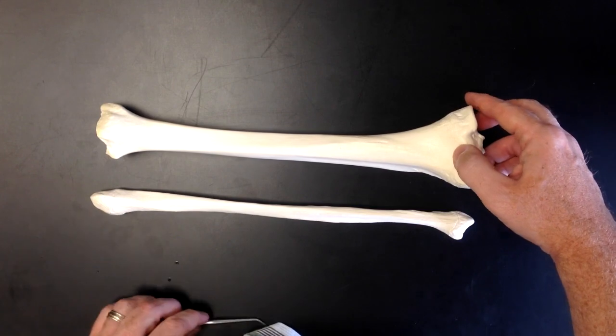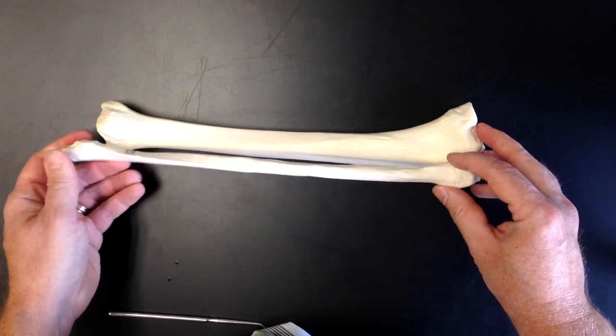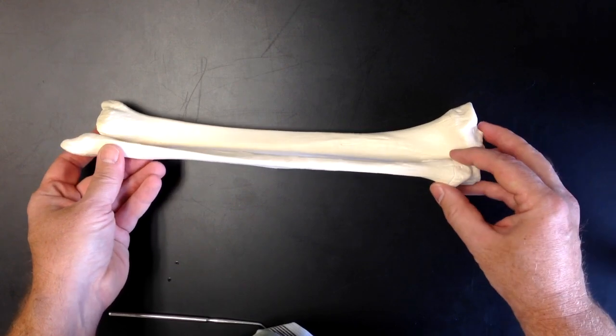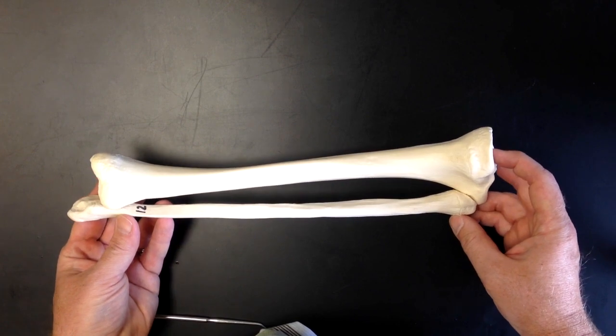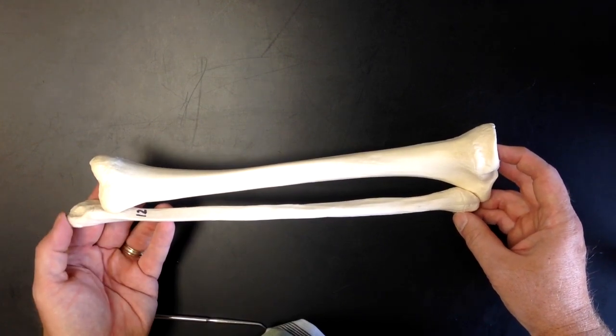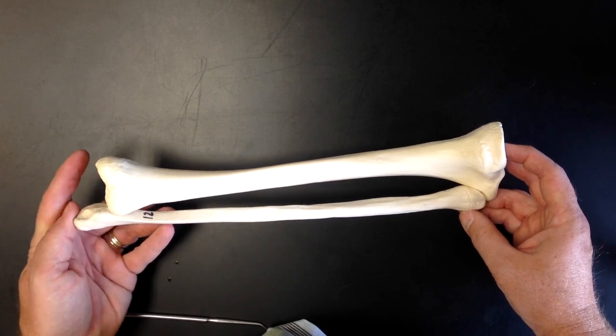The interesting thing about these two bones, if I put them together the way they would be in the body, you'll notice that the lateral malleolus is more inferior or distal than the medial malleolus.